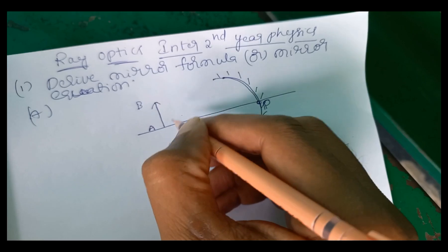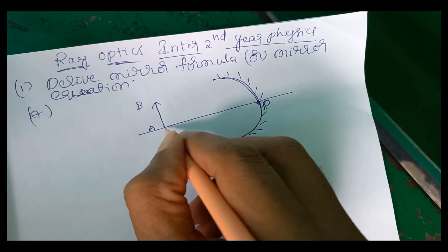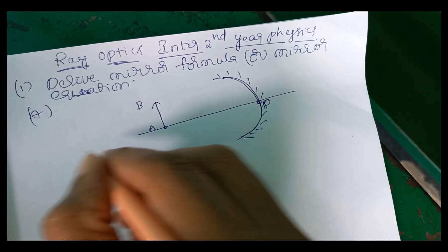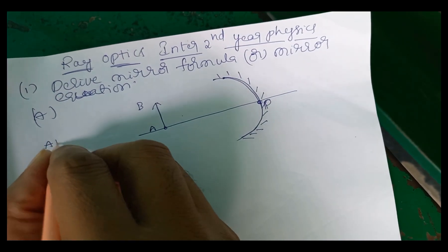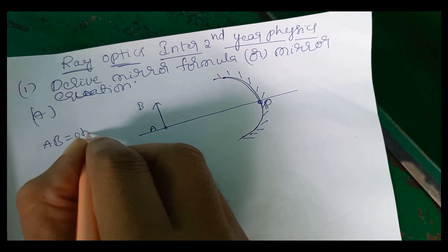So this point A and this point B. A, B is object.